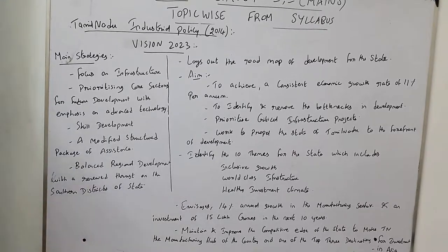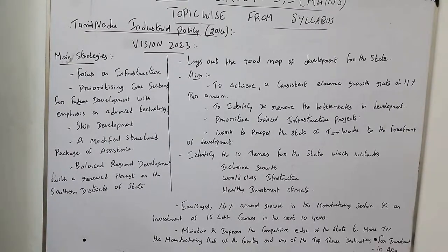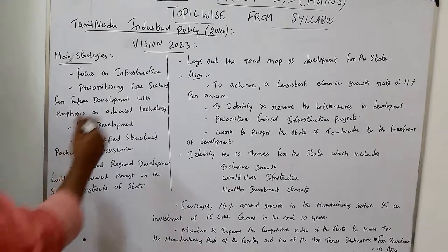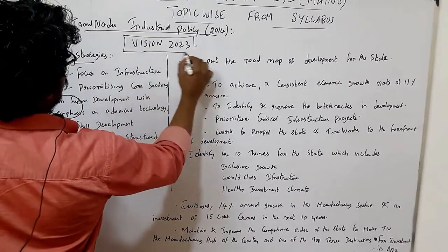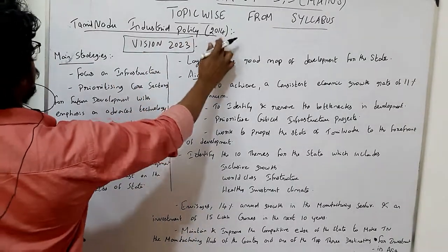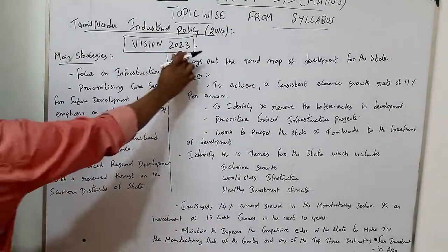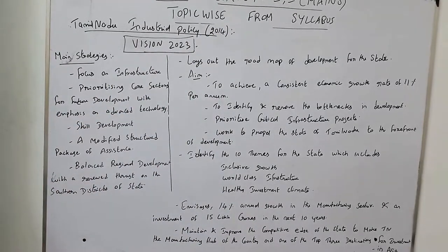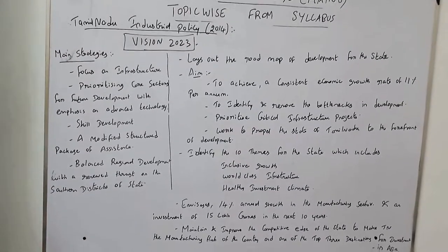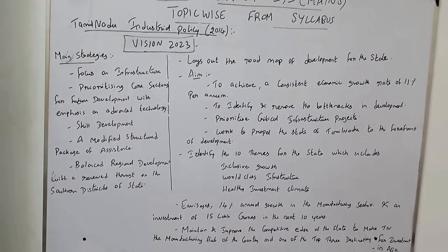Okay friends, let's talk about Tamil Nadu Industrial Policy 2014. We are going to talk about one topic about the industry. We are going to fix the Vision 2023. It's very important. In Tamil Nadu Industrial Policy 2014, there is a Vision 2023, and we are going to talk about that Vision 2023.